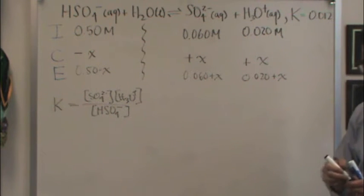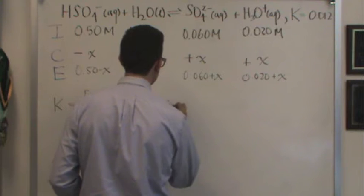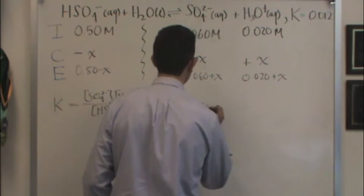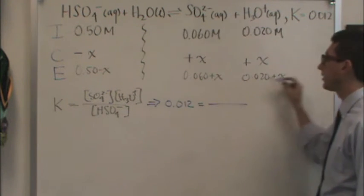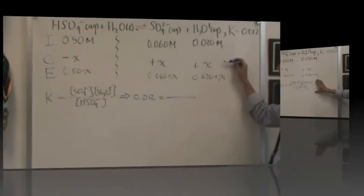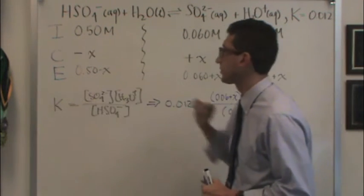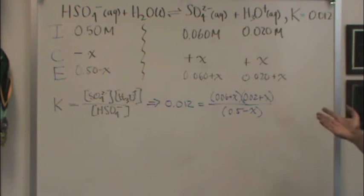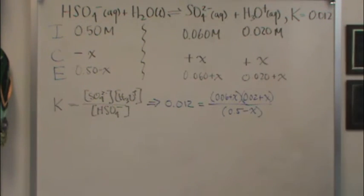There's the K expression. Now I want to plug in to this all my numbers. So K is given at 0.012. And then all these concentrations right here are all from the E line. So remember the E line gives K. My last step is solving for X to find what I want. When I find X, I'm going to put it into these three spaces, and those will be my answers, which are the equilibrium concentrations for those three components in solution.